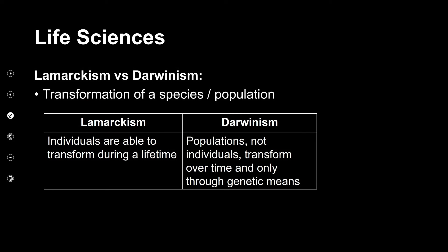The second difference is how the species changed — the transformation of the population. Under Lamarck's theory, individuals are able to transform during a lifetime: they develop a characteristic and in their lifetime pass it on to the next generation. Whereas Darwinism states that the population transforms, not individuals — that's very important. We can't change our genetics; once an individual's genetics is established it cannot be changed.